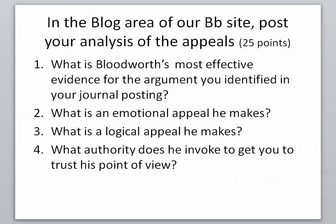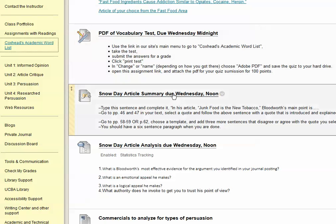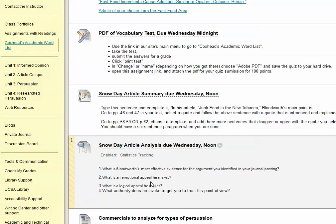The next thing you need to do is in the blog area of our Blackboard site post your analysis of the appeals in the Bloodworth article. You have to figure out what's his most effective evidence, what's his emotional appeal, his logical appeal, and what authority does he invoke to get you to trust his point of view. You can just click right here on the link — Snow Day analysis due Wednesday at noon. Here are the questions you need to do and that's what you have to fill out. So the full assignment for our Snow Day is: vocabulary quiz, robust summary, and analysis of appeals.